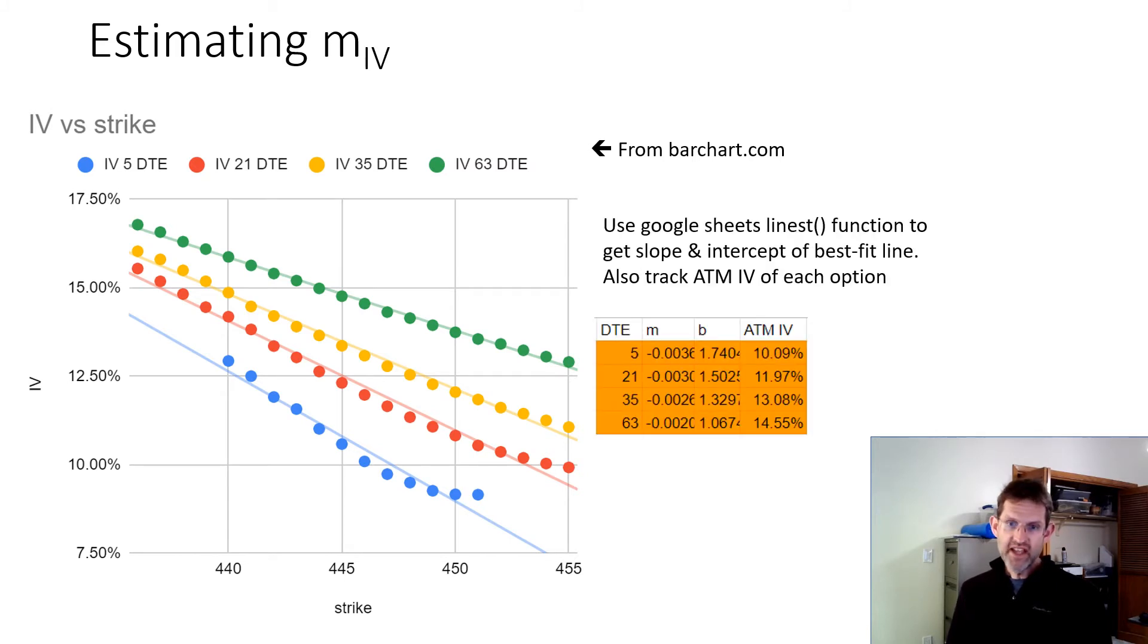So here I tabulate, I do a best fit line in Google Sheets for these four options. And I tabulate the slope and intercept of those best fit lines here. I also keep track of at-the-money IV for each of these options, which we're going to need later.